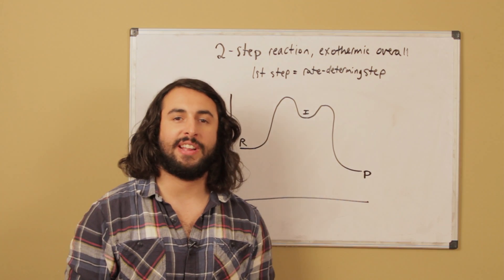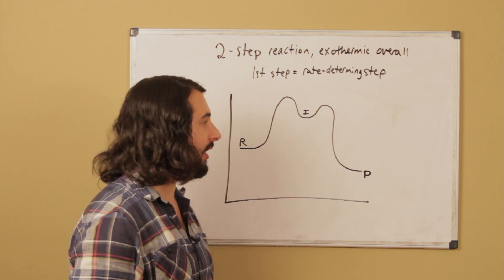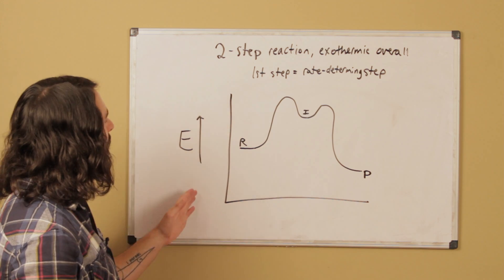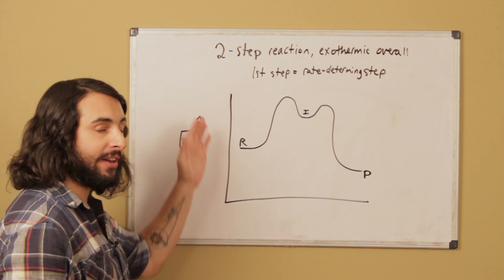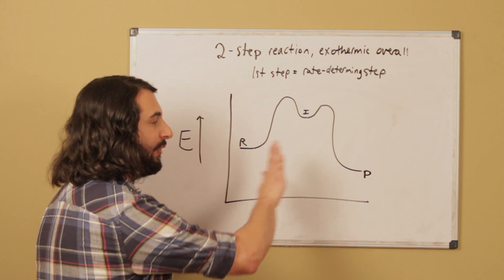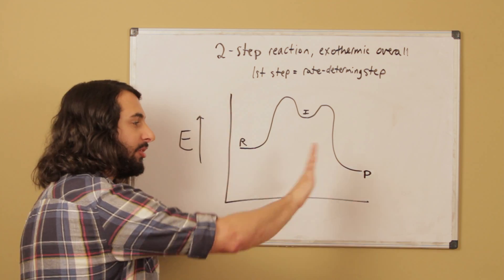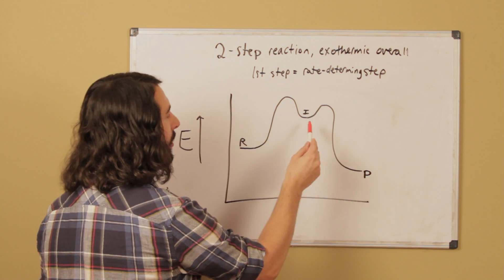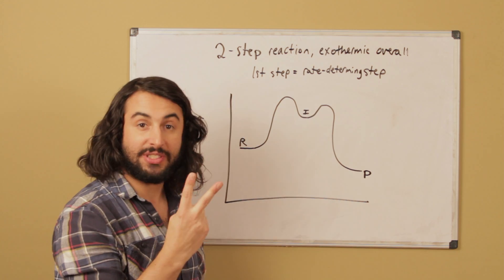Now I've gone ahead and drawn an energy diagram that does fit these criteria. Let's remind ourselves a couple things about energy diagrams. On the y-axis we have potential energy, so potential energy increases going up. We're always moving forward in time this way, so this is the reaction coordinate. We have our reactants and our products, and we must have an intermediate because this is a two-step reaction.